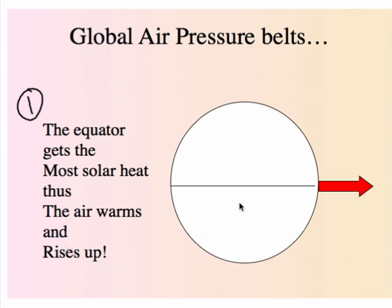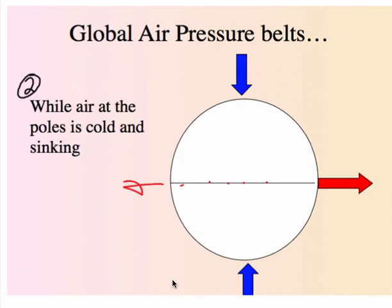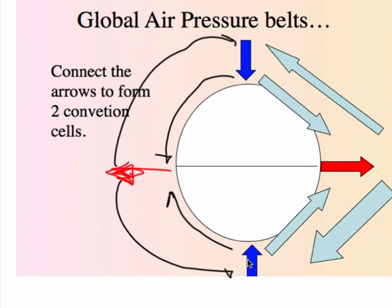Number one: the equator gets the most solar energy, the most heat throughout the air, so air on the equator rises. What type of pressure will you end up with on the equator? If you said low, you're awesome. At the poles, generically, is the coolest air year-round. Air will be descending, going to the north and south pole. When air is being added to the surface, what type of pressure do you get? High pressure.